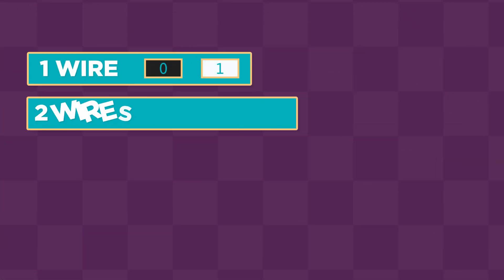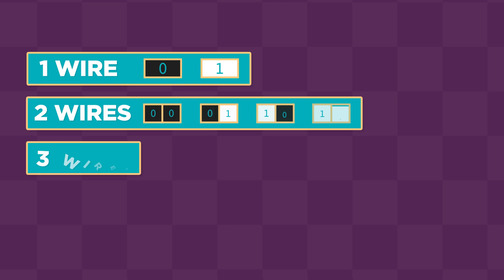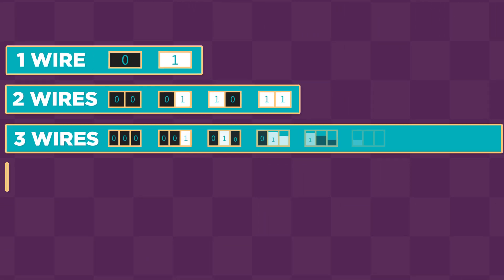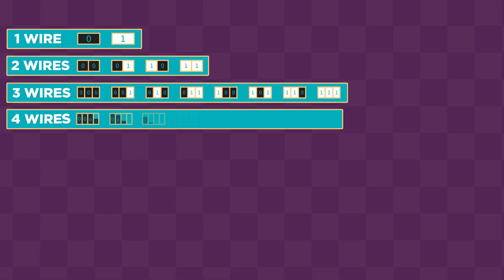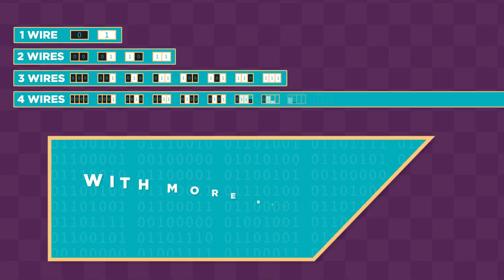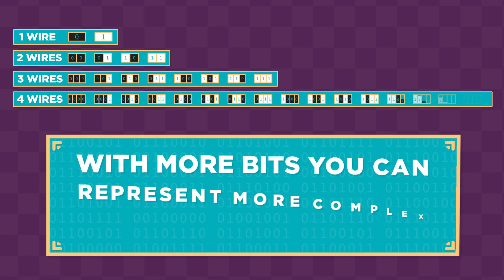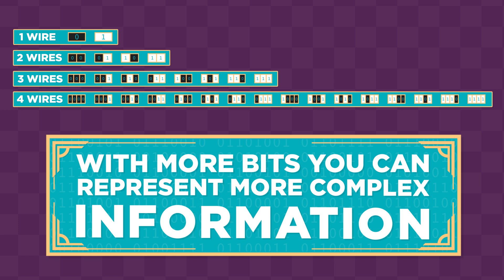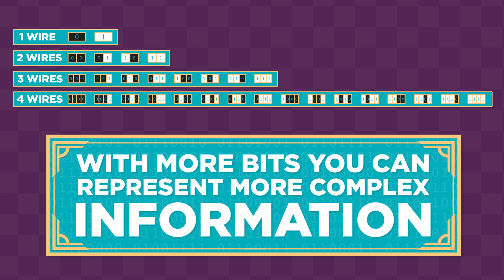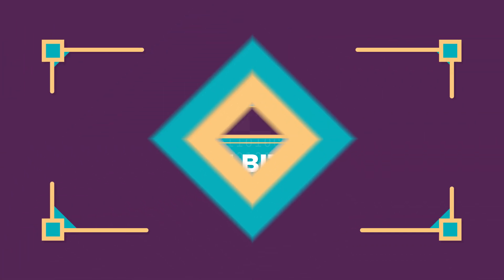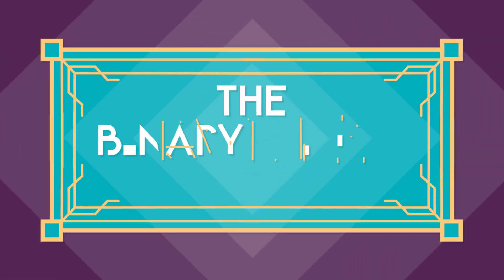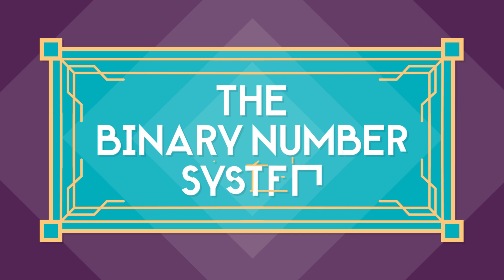If you use more wires, you get more bits — more ones and zeros. With more bits, you can represent more complex information. But to understand that, we need to learn about something called the binary number system.